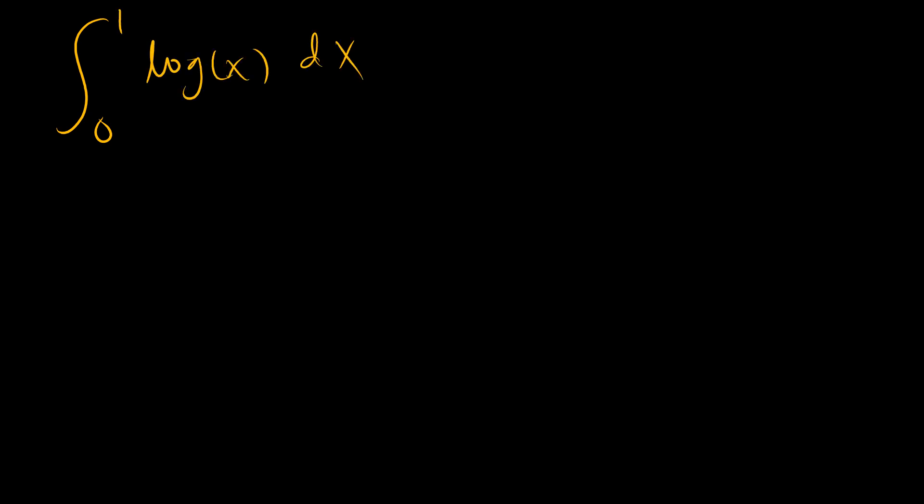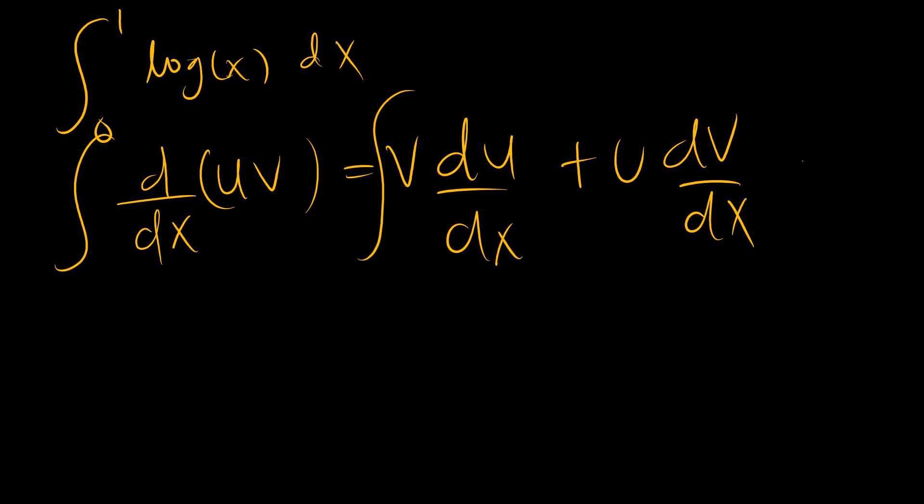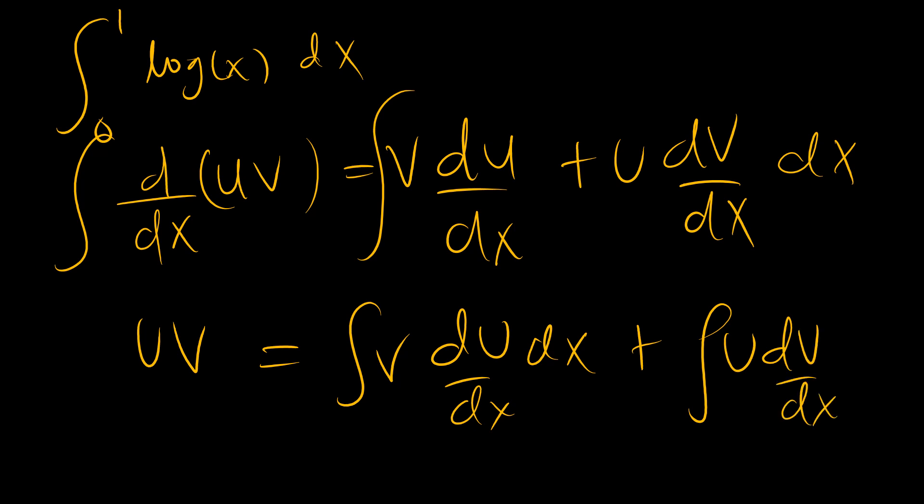Now we're going to use integration by parts, and this derives from the product rule. If you have a function that is a product of two functions u and v, the derivative is v du/dx plus u dv/dx. So when you integrate both sides, you get uv being equal to the integral of v du/dx plus the integral of u dv/dx.